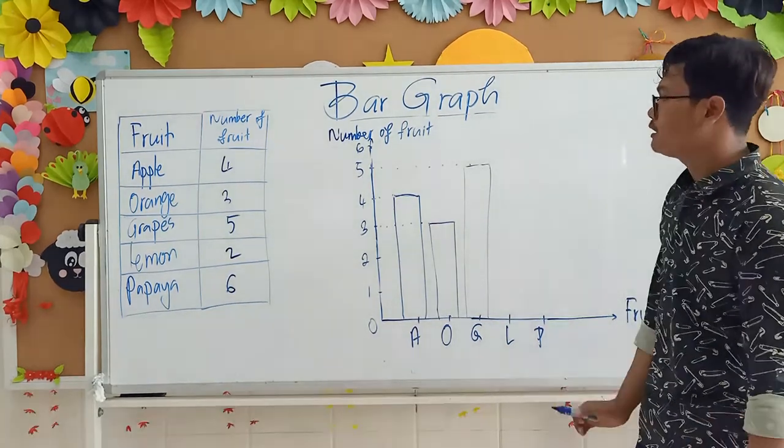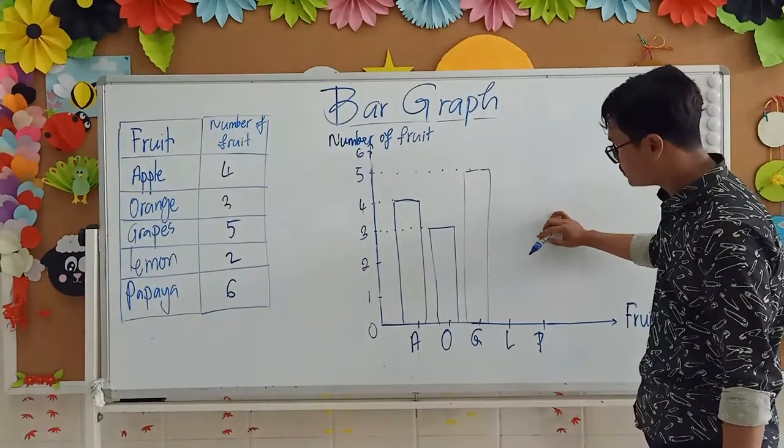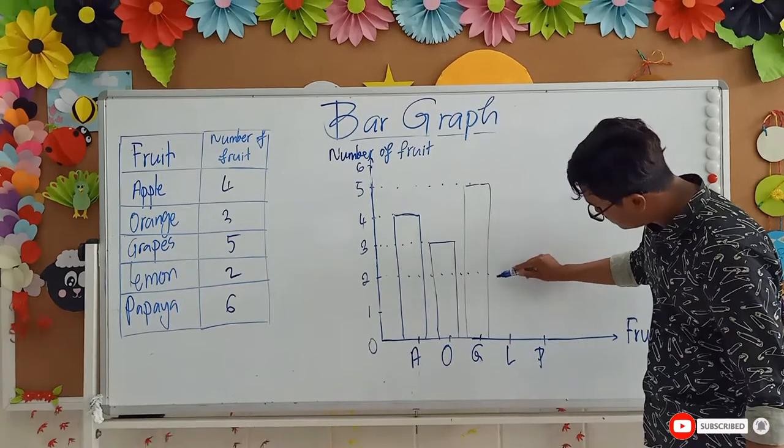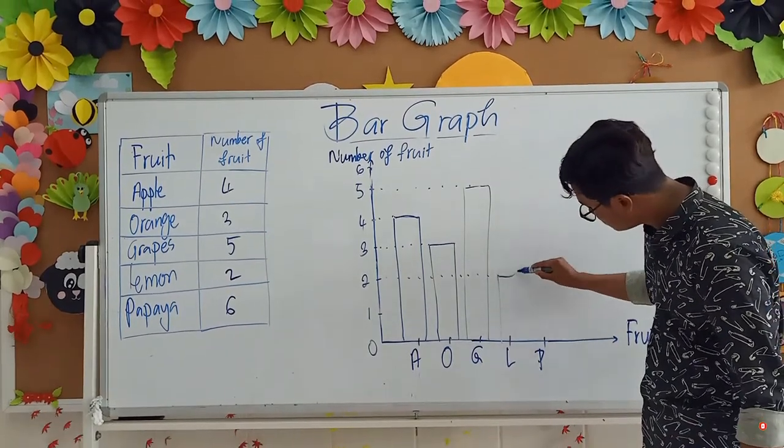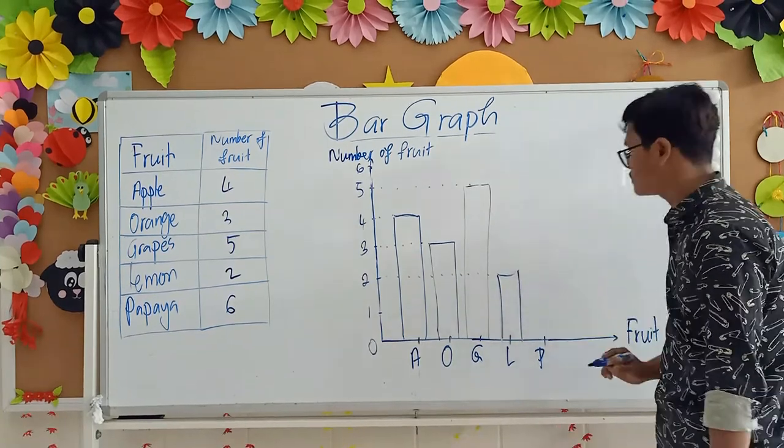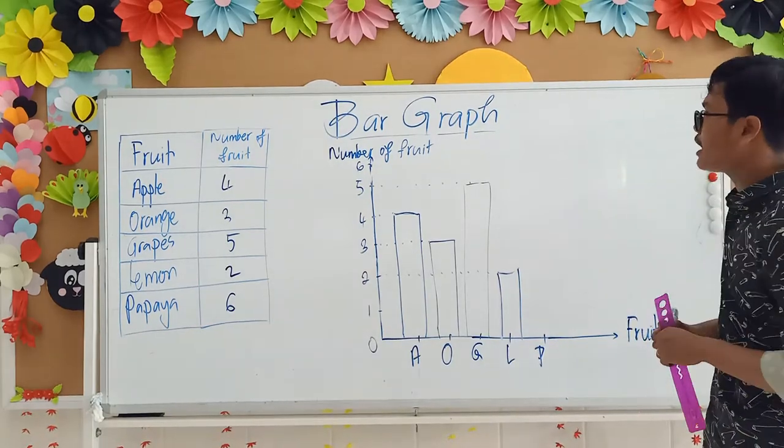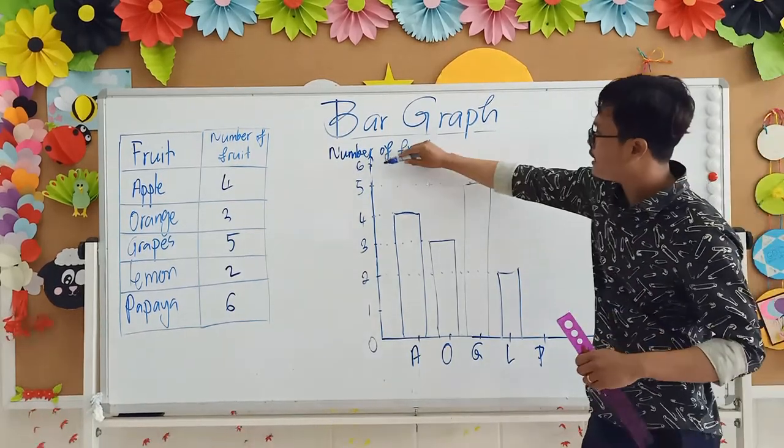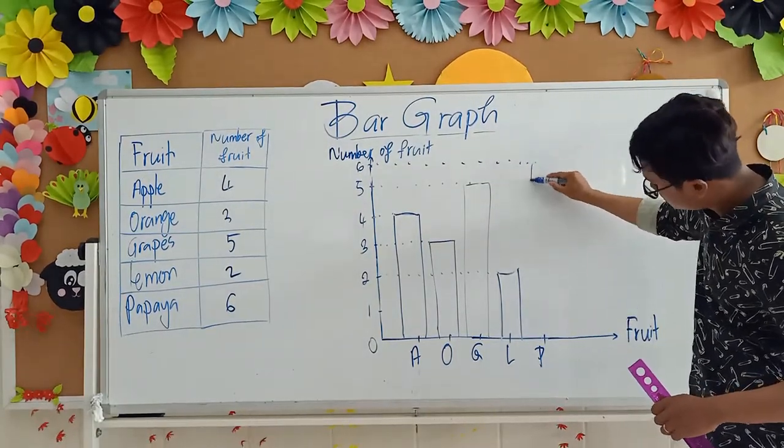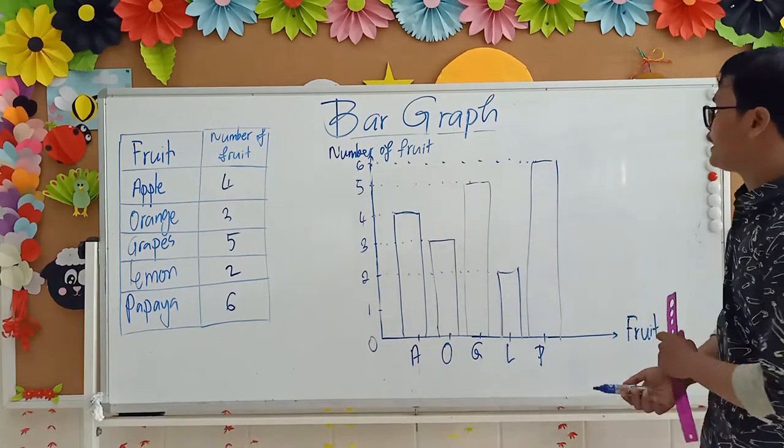I don't use the ruler because you need to write it. If it's you, you need to use the ruler, it's better. And then you need to see orange. So orange you got three. So where three? Here, right? So you need to draw like this. Make sure you're not confused. And then grapes. Grapes five. See? That's five. So five here. And then next one lemon, we've got two. So here's two. And then the last one papaya, we've got six.